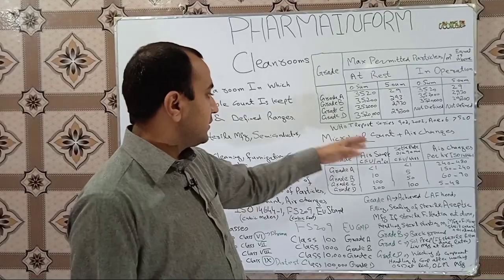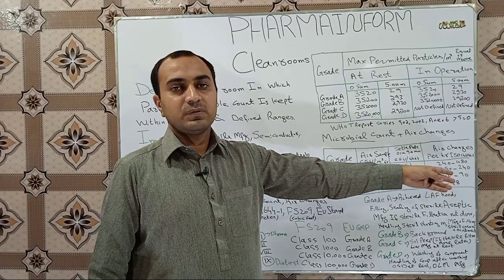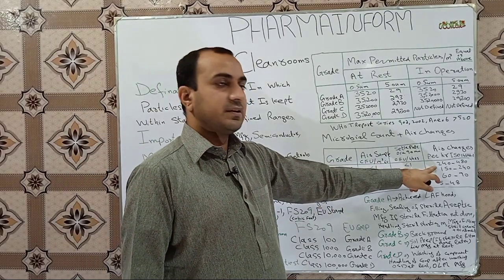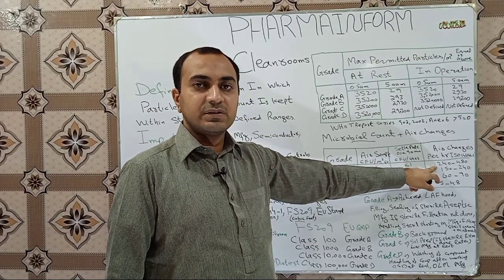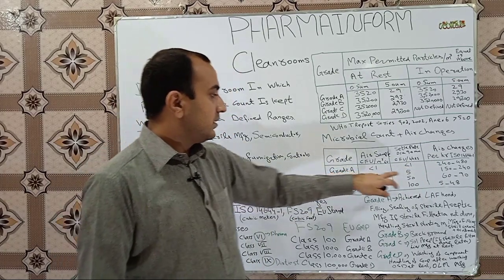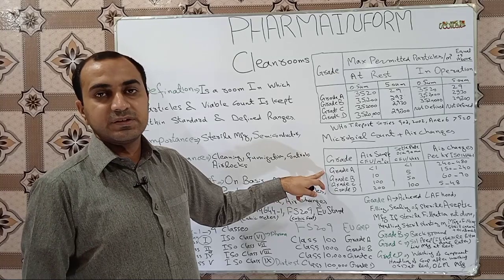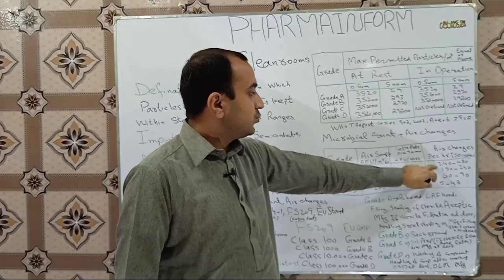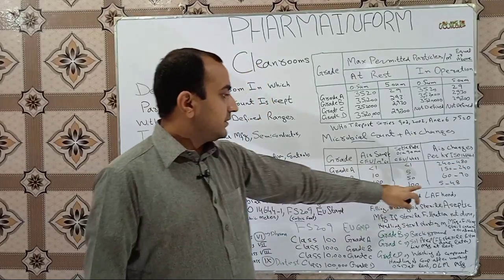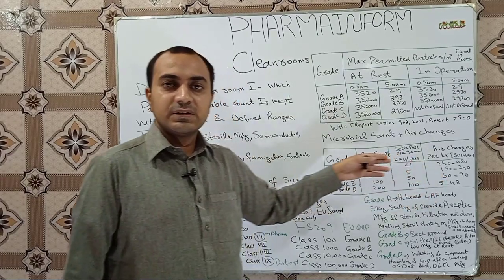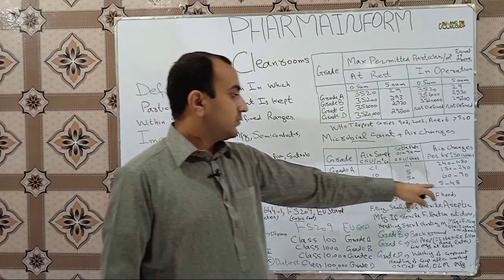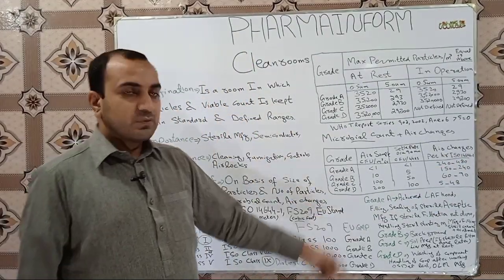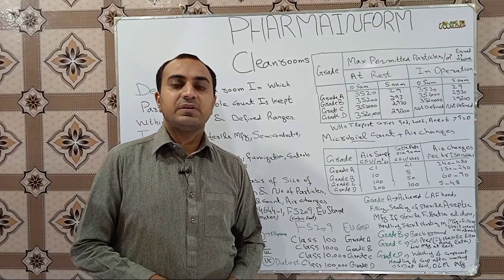We will discuss the formula for calculating air changes and their importance in another video. The key point is: as the number of air changes increases, our area is cleaner. Grade A is the cleanest area in pharmaceutical industries, so air changes are very large — 240 to 480. Grade D is the least clean, so air changes are fewer.